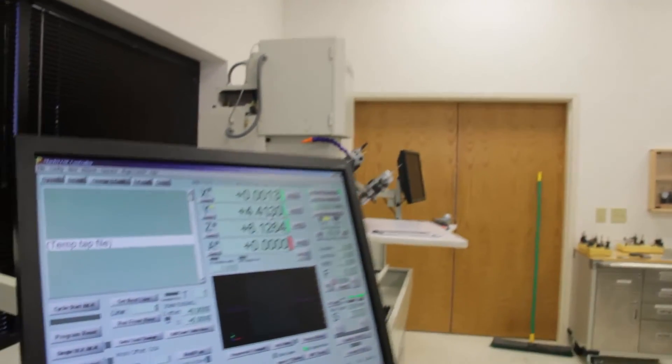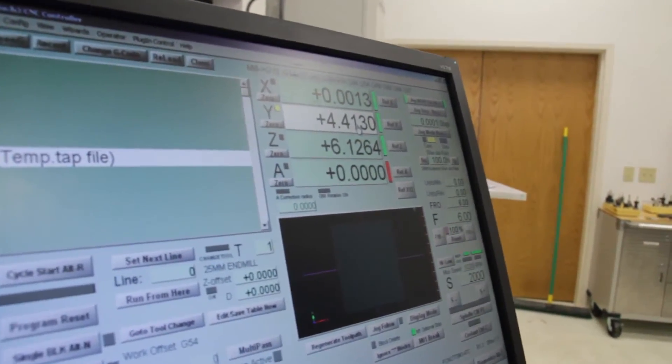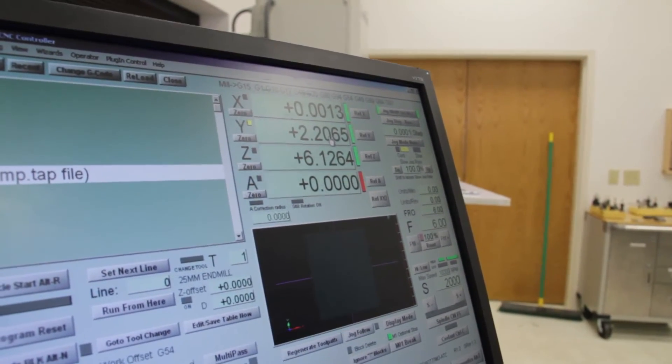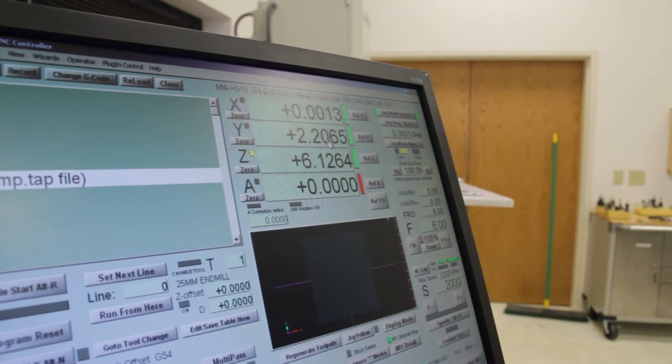I have the indicator reading zero on the back of the Y block. Same thing. Click in the box, divide it by two, enter. And that will be the center of our block in Y.